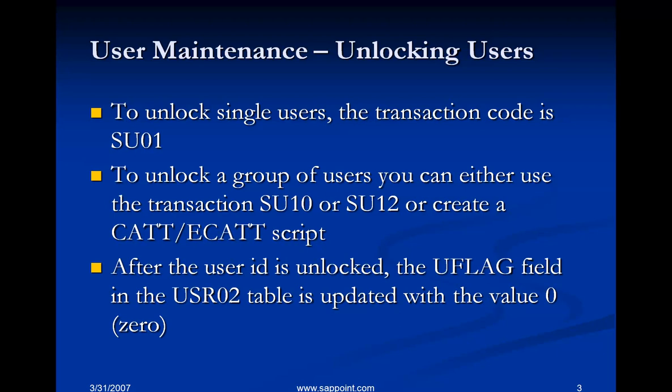After the user ID is unlocked, the U_FLAG field in the USR02 table is updated with the value zero. Before the unlock happens, the U_FLAG field will have a non-zero value. For example, the U_FLAG field would contain the value 64 if the ID was locked manually by the user administrator, and the value 128 if the ID got locked due to incorrect logon attempts. So depending on how the ID was locked, the U_FLAG field will have that corresponding value, but when you unlock it, the U_FLAG field is updated with the value zero, meaning the ID is unlocked.